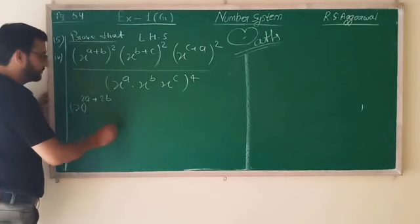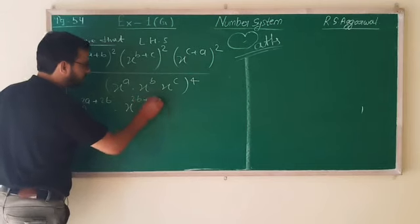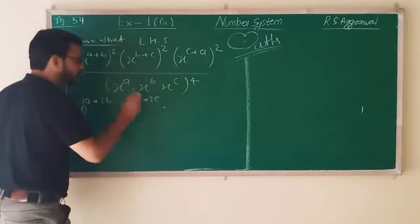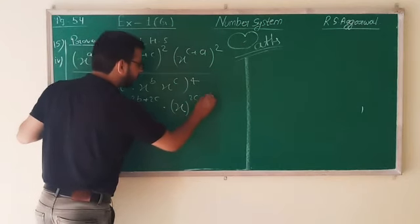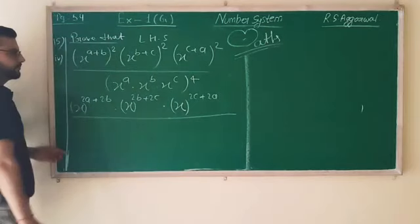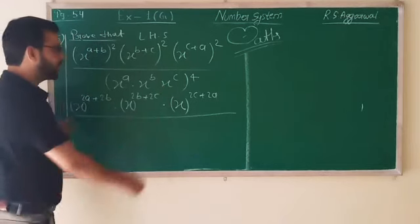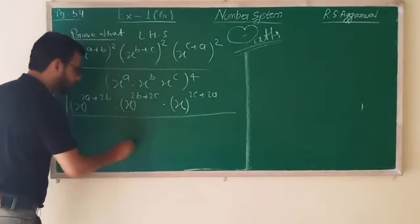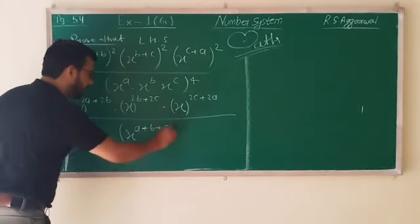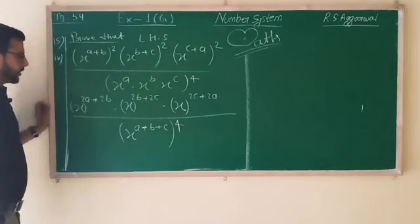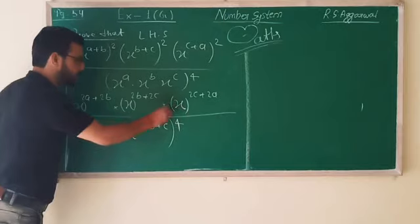2 multiply A is 2A plus 2B. Next, X to the power 2B plus 2C. Next, X to the power 2C plus 2A. And upon. Same base, multiply case, so power add. It means X to the power A plus B plus C, and the whole power is 4.